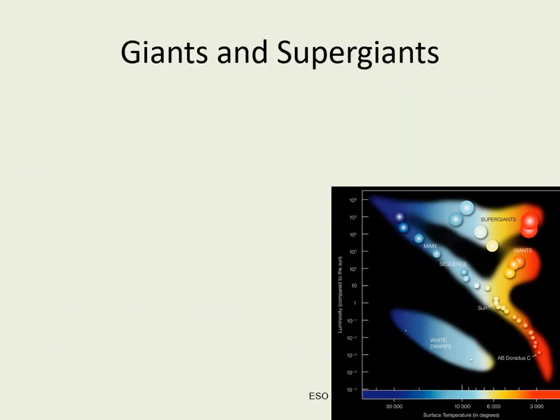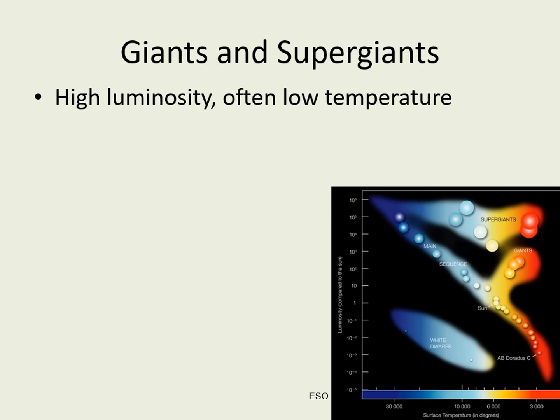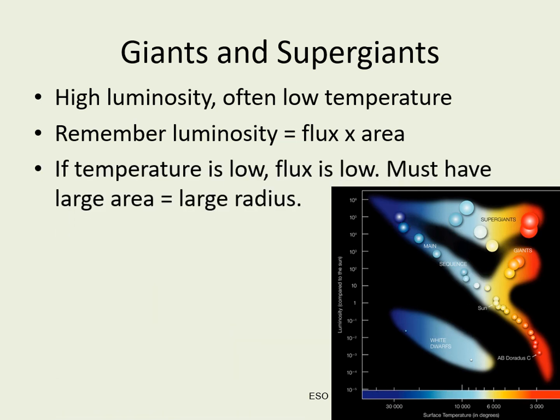Stars in the upper right corner of the HR diagram are called giants and supergiants. These stars have very high luminosities — typically much higher than main sequence stars with the same temperature. Remember that luminosity is flux times surface area. A cool star has low flux, meaning each square meter of surface doesn't produce much light. However, if the cool star is very big, it makes a lot of light just because it has a large surface. Giants and supergiants can be hundreds or thousands of times the radius of the sun.